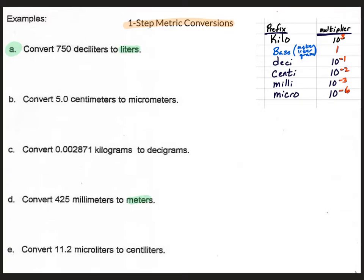We'll start with A. In this question we're going to convert 750 deciliters into liters. The piece that we know already is the 750 deciliters, so that's what we'll start with. We're going to turn that into a fraction by writing it over the number one. Now we want to find out what we're going to convert to and from. So at this point we have deciliters, and we're going to convert that to liters.